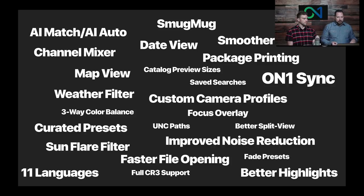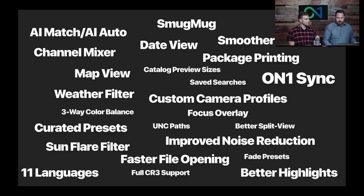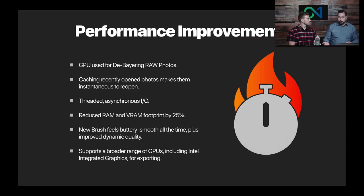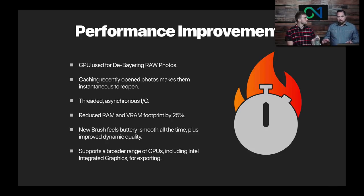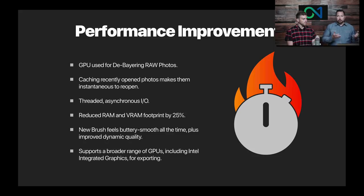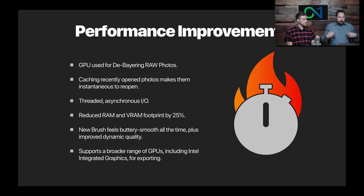Before diving into features, let's talk about performance — which is something you really have to feel. With every release we have a dedicated team of engineers who work on nothing but making Photo Raw faster. This time they've improved things in two key areas: one is opening raw photos — as you open a photo from browse into develop, or change photos in the filmstrip, it's much faster. We've done that by using the GPU more for opening raw photos, and we've also gotten smarter at moving data around the system.